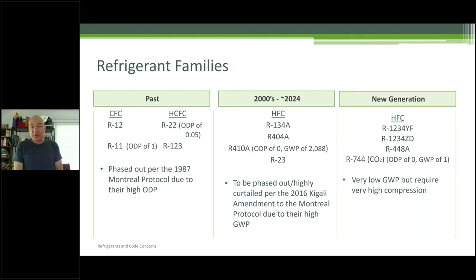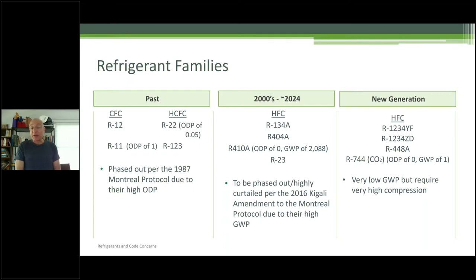In 2024, the Biden administration is trying to speed up the phase-out of 410A, which is what we mostly use today in VRFs. The problem is that the CFCs and HCFCs depleted the ozone layer. The ozone-depleting potential of R22 is 0.05, while 410A is zero — fortunately. However, the global warming potential of 410A is 2,088, meaning one pound of 410A going into the atmosphere has the effect of 2,088 pounds of CO2 being discharged. That's enormous.